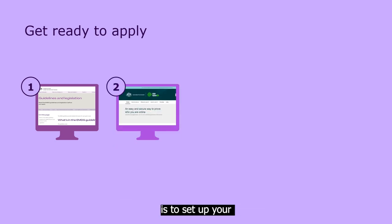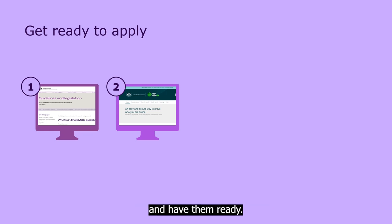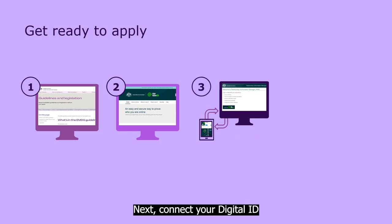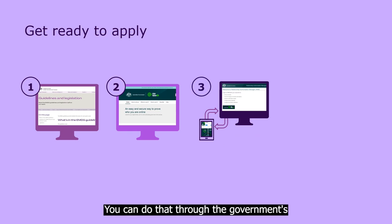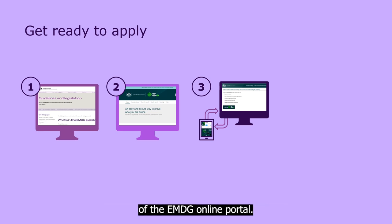Second step is to set up your government digital ID, or get the details of your digital ID and have them ready. Next, connect your digital ID to your business's ABN. You can do that through the government's RAM system. There's a link to the RAM system on the homepage of the EMDG online portal.